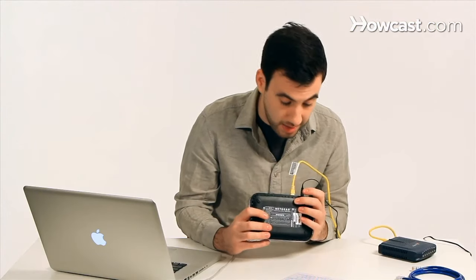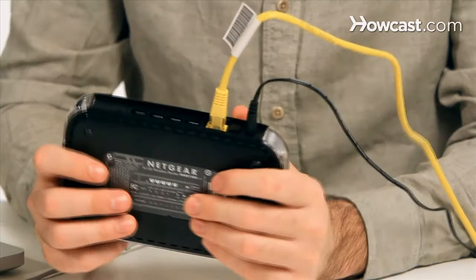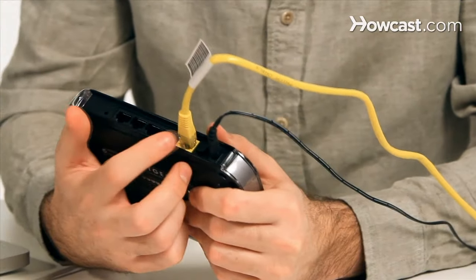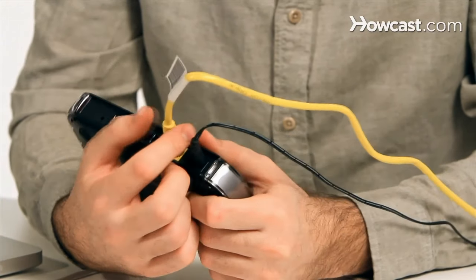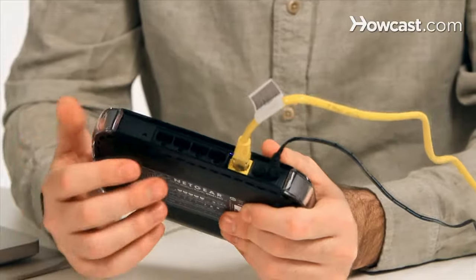This router actually doesn't say anything on it, but I know it's the right port because it has a different color. On the back of every router you always have a few Ethernet ports. One of them will be different, and the different one is the one that connects to the Internet. The other ones connect to all the computers and devices on your network, and of course you can also connect devices wirelessly.